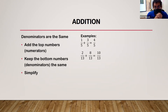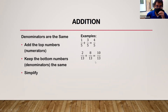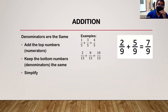The next example is 2-thirteenths plus 8-thirteenths: add the numerators — 2 plus 8 equals 10 — keep the denominator 13 the same, and since we can't simplify further, the answer is 10-thirteenths. Another example on the side: two-ninths plus five-ninths equals seven-ninths.